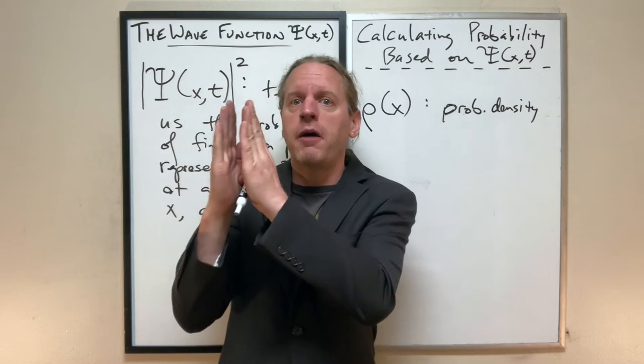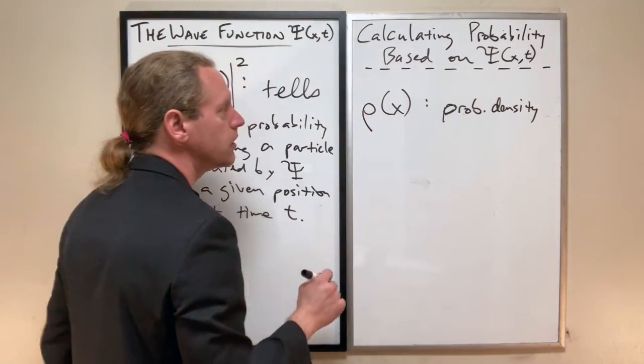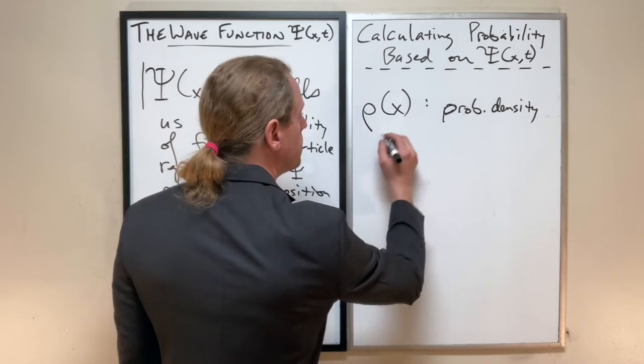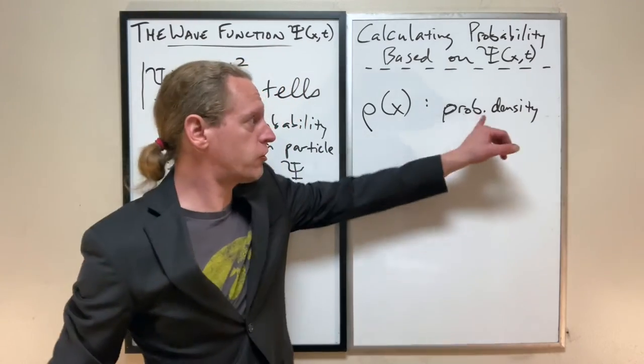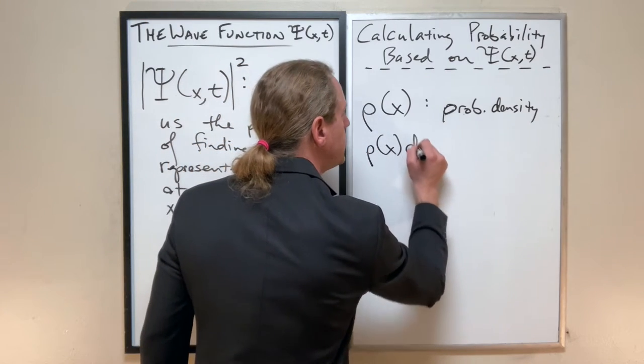What is the probability of finding that whatever within that range there? So specifically, we said that the probability density function, if you multiply it, if you take rho of x times dx,